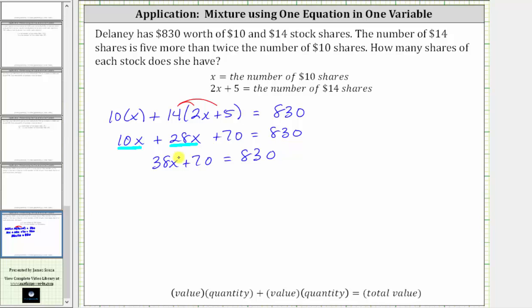Next step is add or subtract, isolate 38x, and therefore we subtract 70 on both sides. Simplifying, we have 38x is equal to 830 minus 70, which is equal to 760.